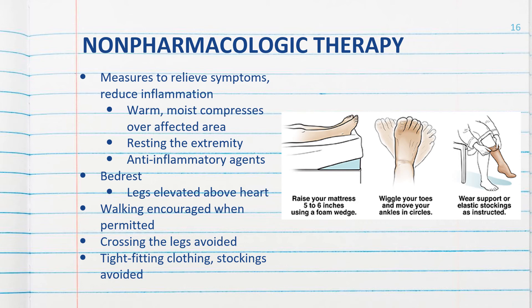Treatment of venous thrombosis also includes non-pharmacologic measures to relieve symptoms and reduce inflammation. With superficial venous thrombosis, applying a warm, moist compress over the affected vein, resting the extremity, and using anti-inflammatory agents typically provides relief. Bed rest may be ordered for patients with DVT — duration typically determined by the extent of leg edema. The legs are elevated 15 to 20 degrees with knees slightly flexed above the level of the heart to promote venous return and discourage venous pooling.